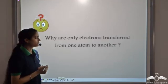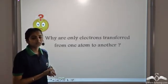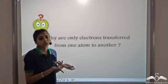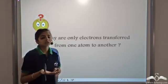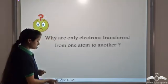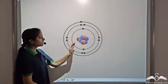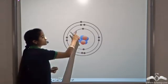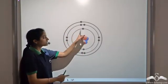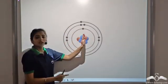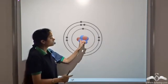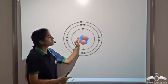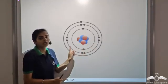Why are only electrons transferred from one atom to another? When we talk of valency, we say it is the number of electrons gained, shared or lost. Why aren't we saying it is the number of protons or neutrons? This is because the protons and neutrons are tightly bound in the nucleus of the atom. The electrons are freely revolving in the shells or orbits of the atom. That is why the electrons can be lost, gained or shared. But protons or neutrons, which are tightly bound in the nucleus, cannot take part in reactions. That is why only electrons participate in chemical reactions.